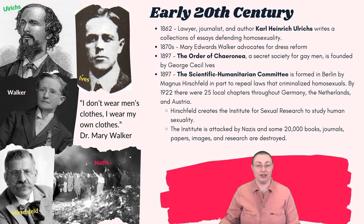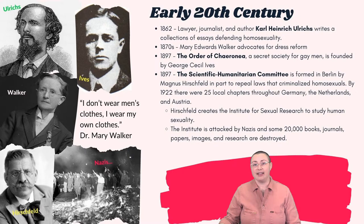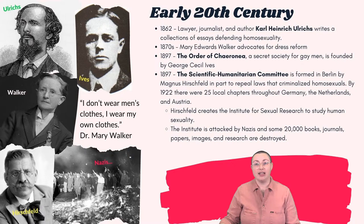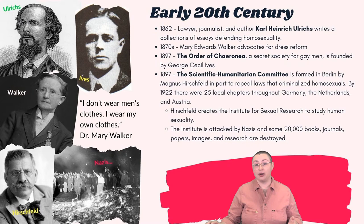Ulrichs wrote extensively on this subject and created many pamphlets that queer readers found validating for the time. He was eventually imprisoned when his home in Hanover, Germany was annexed by Prussia, jailed for anti-Prussian activities, and eventually left his home country for Italy. He was not able to continue his writings in Germany for fear of being imprisoned, but he served a very important role in the advocacy of LGBTQ rights — one that would also have an important influence in the United States.